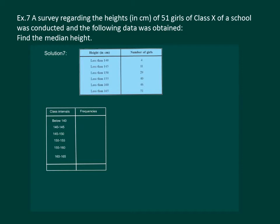Now let us calculate the corresponding frequencies. Given are the cumulative frequencies. So the first entry remains the same. Next frequency can be calculated by subtracting 4 from 11, that is 7. Next is 29 minus 11, that is 18.